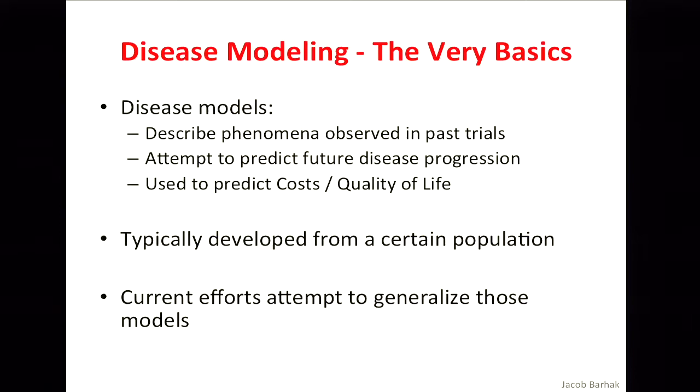Those are equations that describe these phenomena. Many times they are used to find out how much it will cost the system or what will be the quality of life of a population if they have a certain medical condition. However, those disease models are derived from a certain population — usually there's a big set of data upon which some analysis is made and those equations are derived. They describe the phenomena seen in that clinical trial or dataset, and they may not always fit other populations.